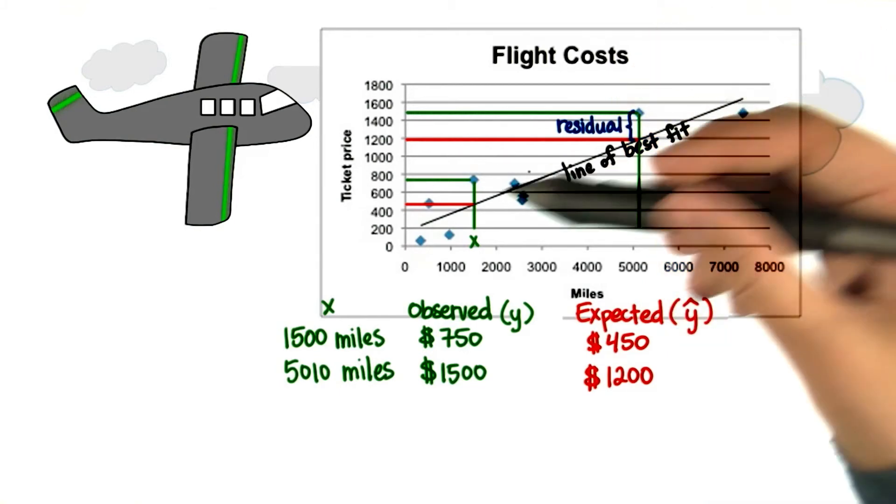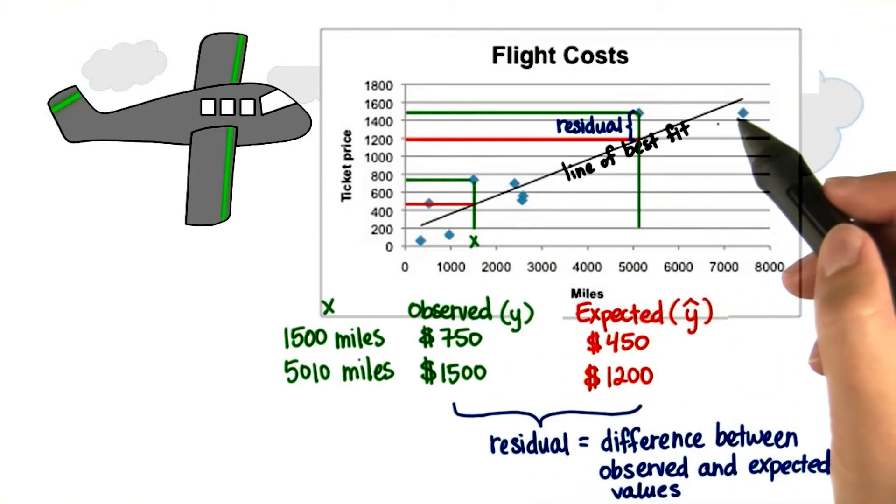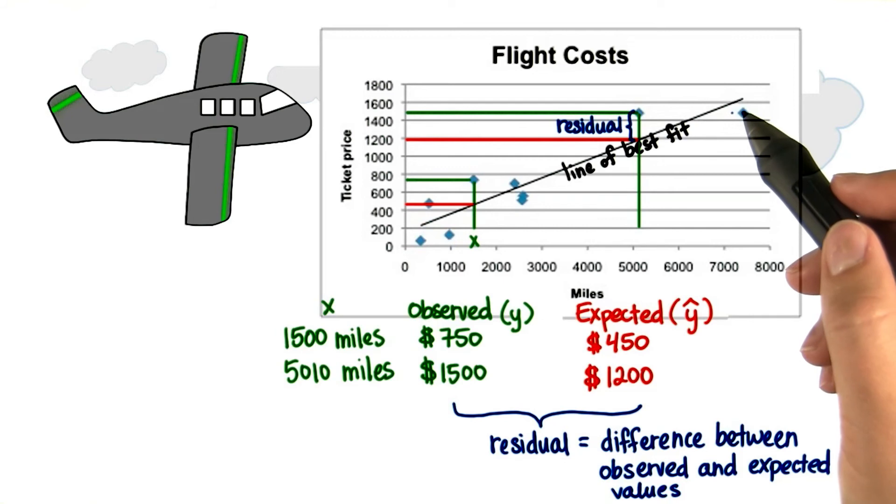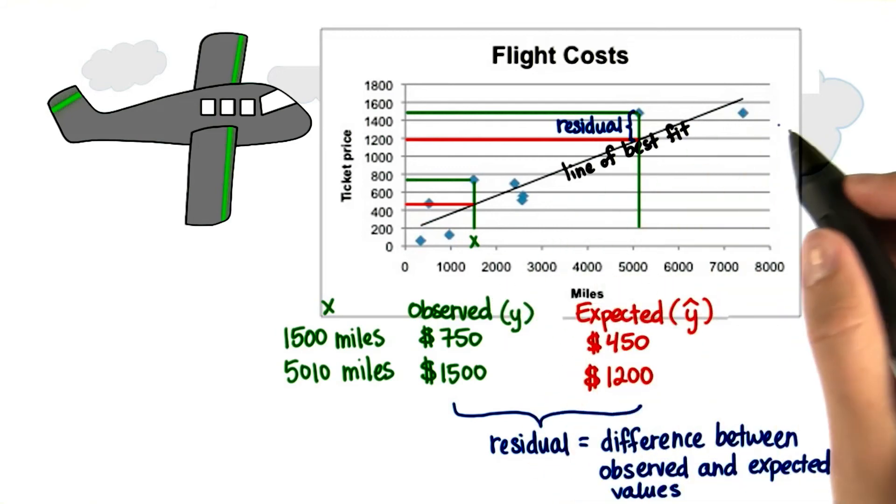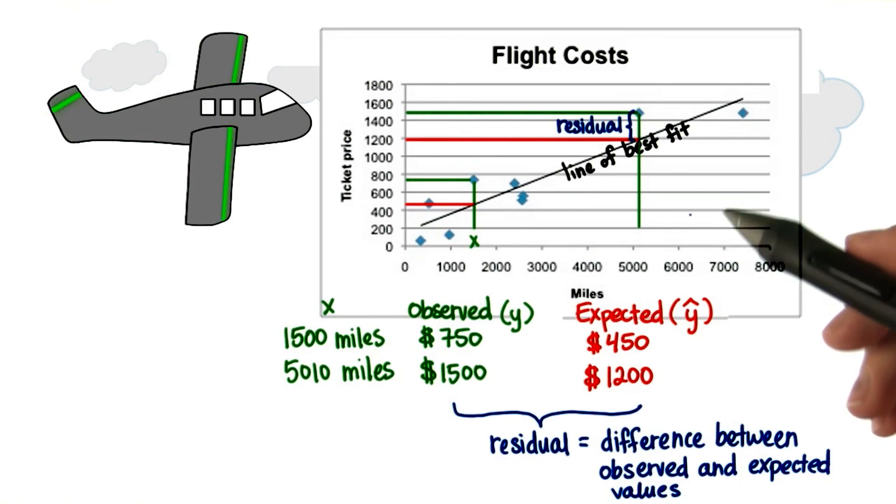There's a residual for every point in the data set. It might be 0 or it might be huge. The most important thing is that we're able to find this line of best fit and then use it to visualize the data and the relationship between x and y and make predictions.